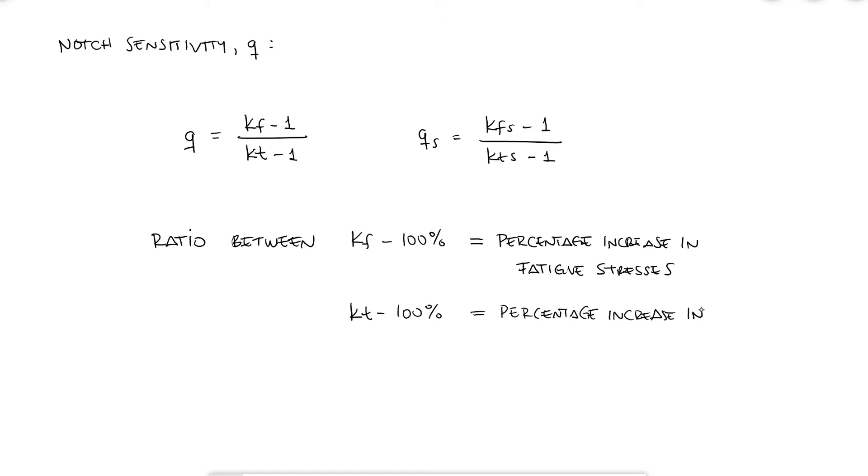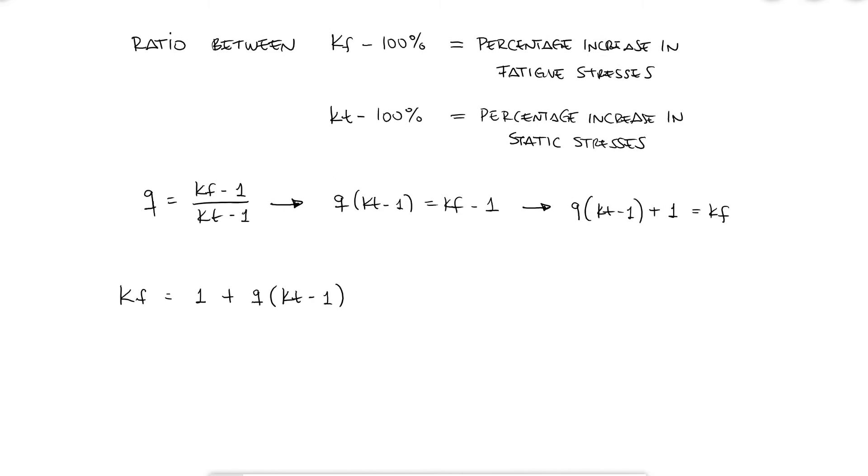We define notch sensitivity Q as KF-1 over KT-1 and QS for shearing as KFS-1 over KTS-1. Since all K's are expected to increase the theoretical stress and are therefore 1 or higher, this definition for sensitivity is basically comparing, as a ratio, the percentage of increase KF-100% for fatigue to the percentage of increase KT-100% for static loading. And since the information we have access to, based on experimental data, is the notch sensitivity Q, these expressions are rearranged to find KF as a function of KT and Q, or KFS as a function of KTS and QS for shearing.